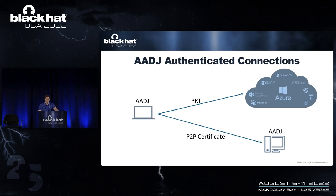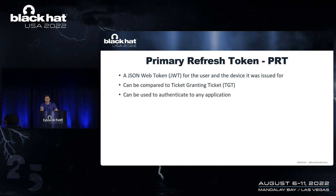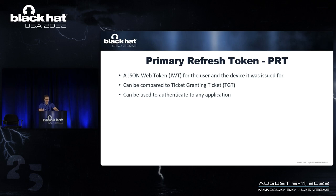The PRT — Primary Refresh Token — is a JSON Web Token which contains claims on both the device and the user it was issued for. If a user is connected to two devices, every device will have a different PRT for that same user session. Similarly, if two users are connected to the same device, there will be two different PRTs. The PRT can be compared to a TGT (Ticket Granting Ticket) in on-prem, where having the PRT and the session key bound to it means you are authenticated and don't need to re-authenticate.